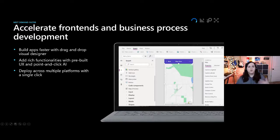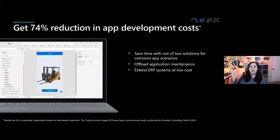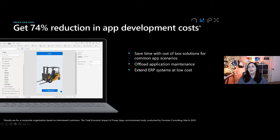Deployment across multiple platforms is huge. Normally when building an application, if it needs to support iPhone, Android, and desktop, that's a lot of code. If you build it in Power Apps, it's automatically usable across all those devices. We estimate about a 74% reduction in app development costs because we can use the drag-and-drop interface to build front-ends, offload application maintenance, and extend ERP systems at low cost.